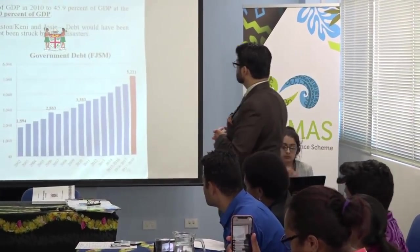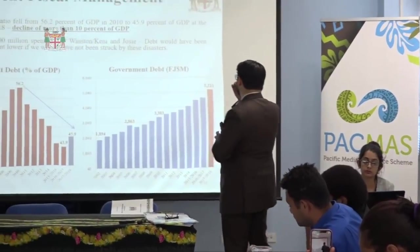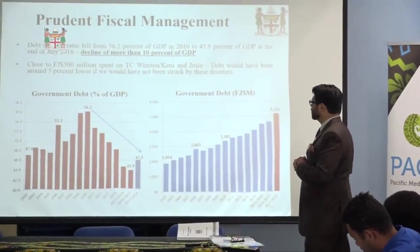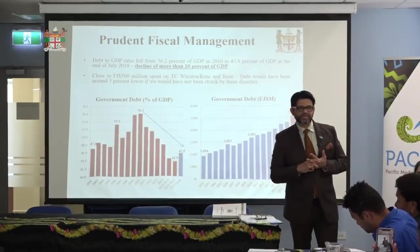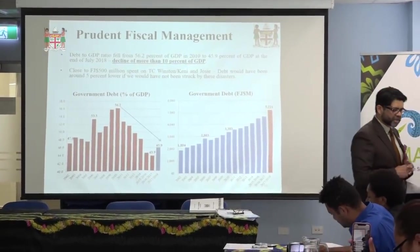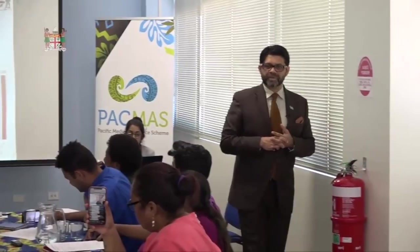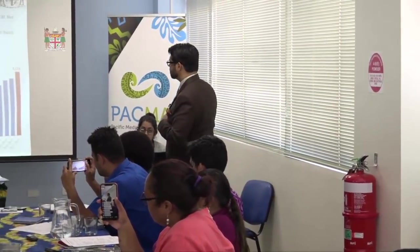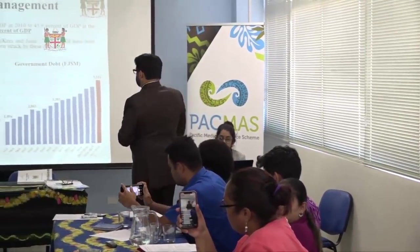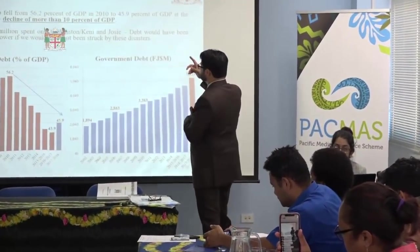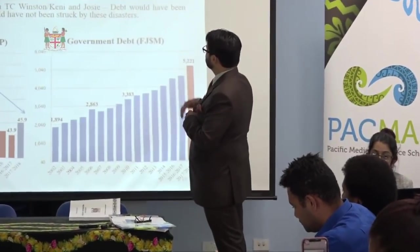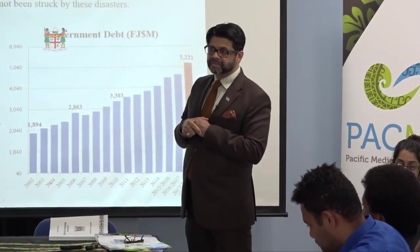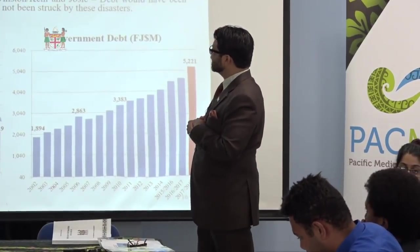Debt to GDP ratio: there are two ways of measuring debt — the actual dollar value and the percentage of GDP. Debt to GDP ratio fell from 56% of GDP in 2010 to 45.9% at the end of July 2018 — a decline of more than 10% of GDP. If Winston had not happened, we would have been $500 million richer and this bar would have been even smaller.